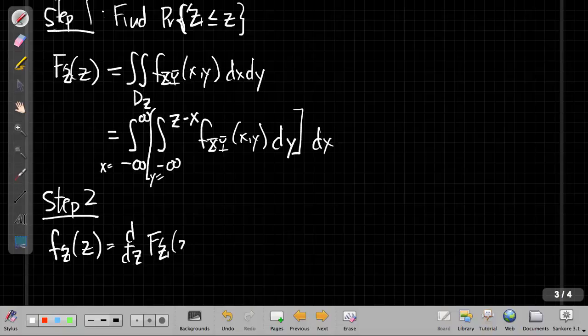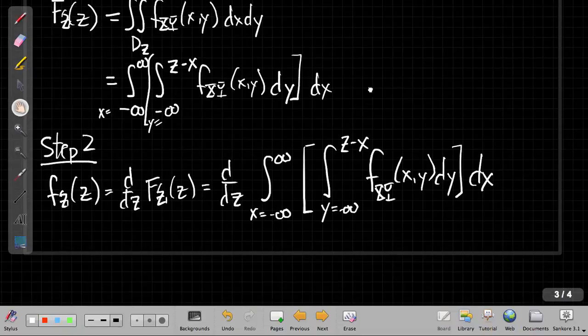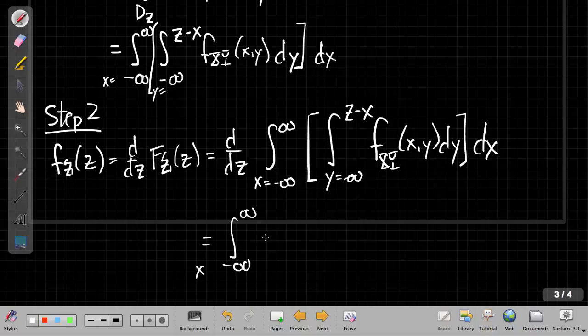For step two, I know the PDF is equal to the derivative with respect to z of the CDF. So now I can plug in that expression with the integral I just had. So this is as x goes from minus infinity to plus infinity, inside that I have an integral as y goes from minus infinity up to z minus x. Those are all the outcomes of x and y that satisfy capital Z less than or equal to little z. I'm integrating the joint PDF over this region, and then integrating again with respect to x.